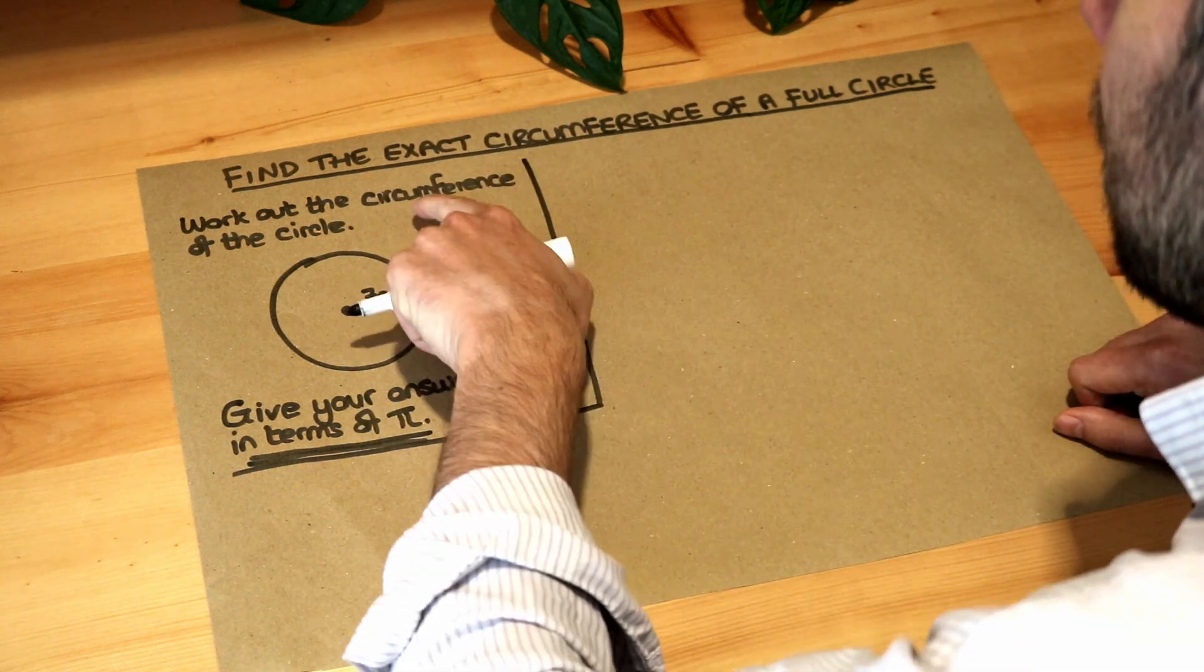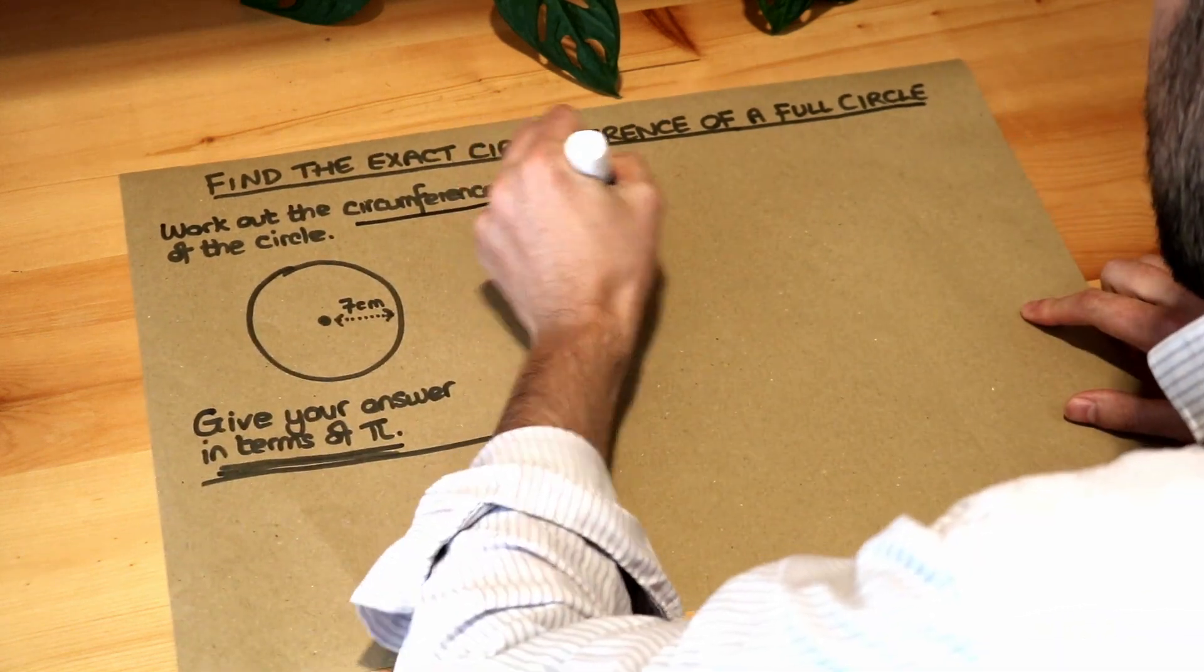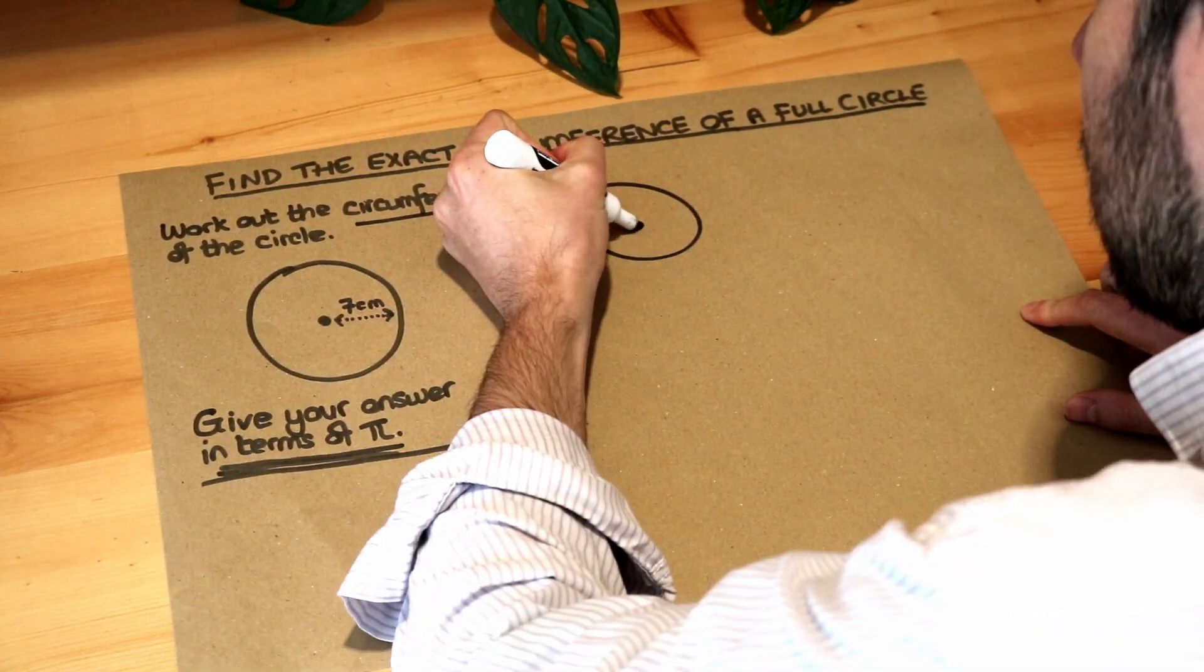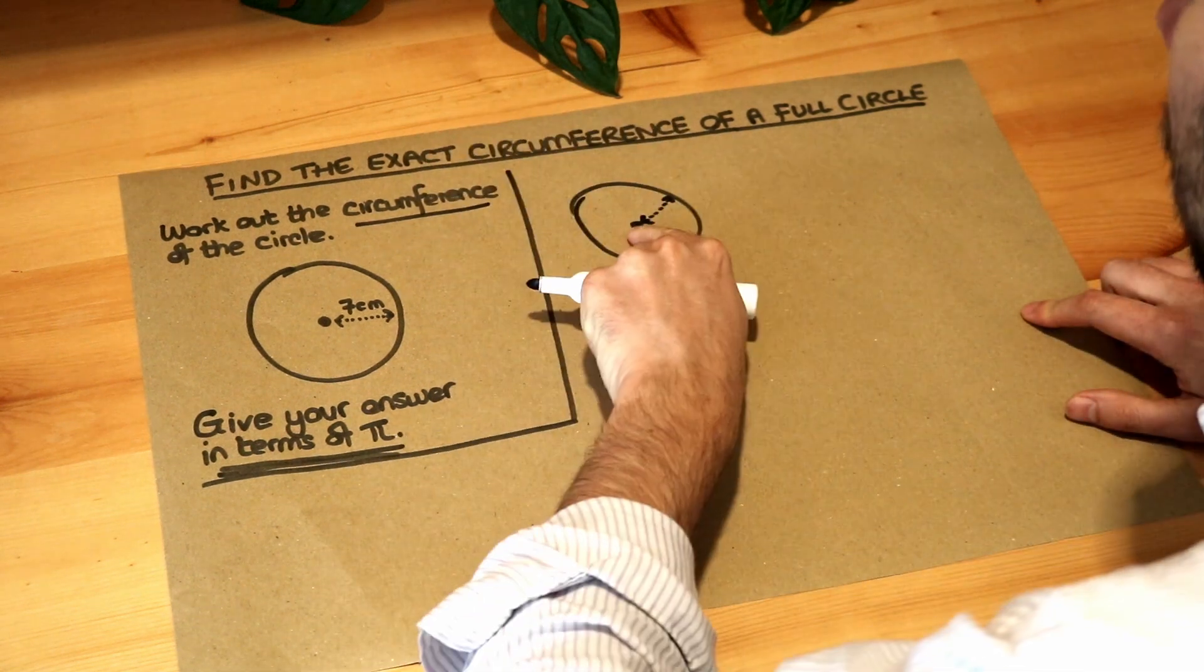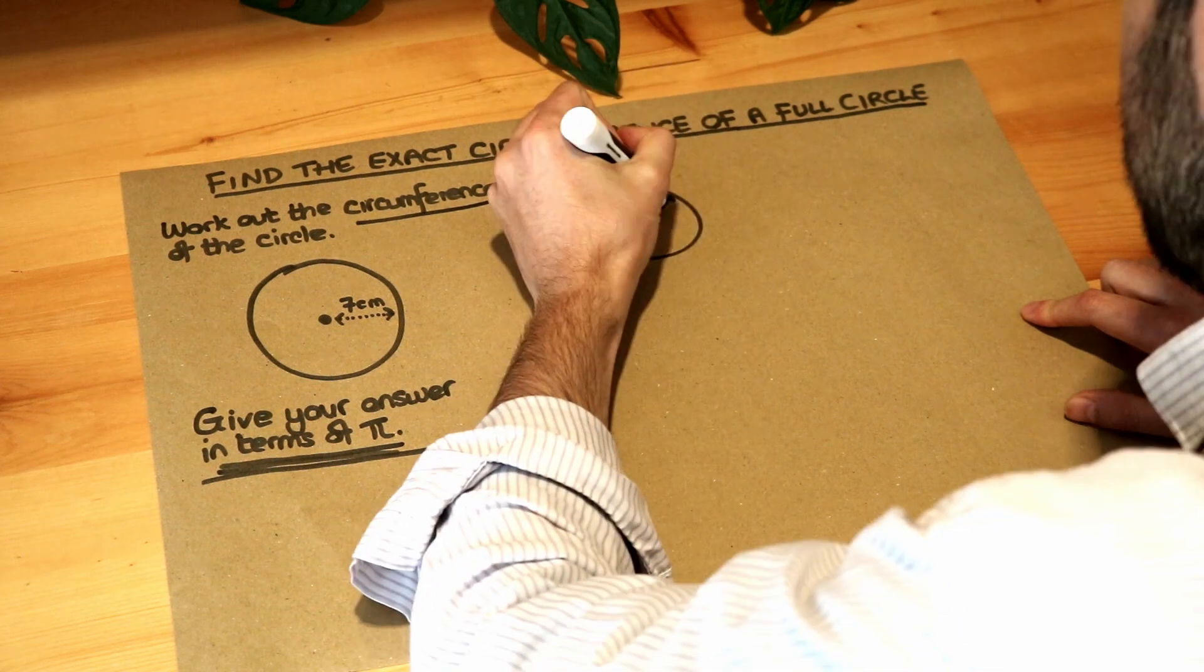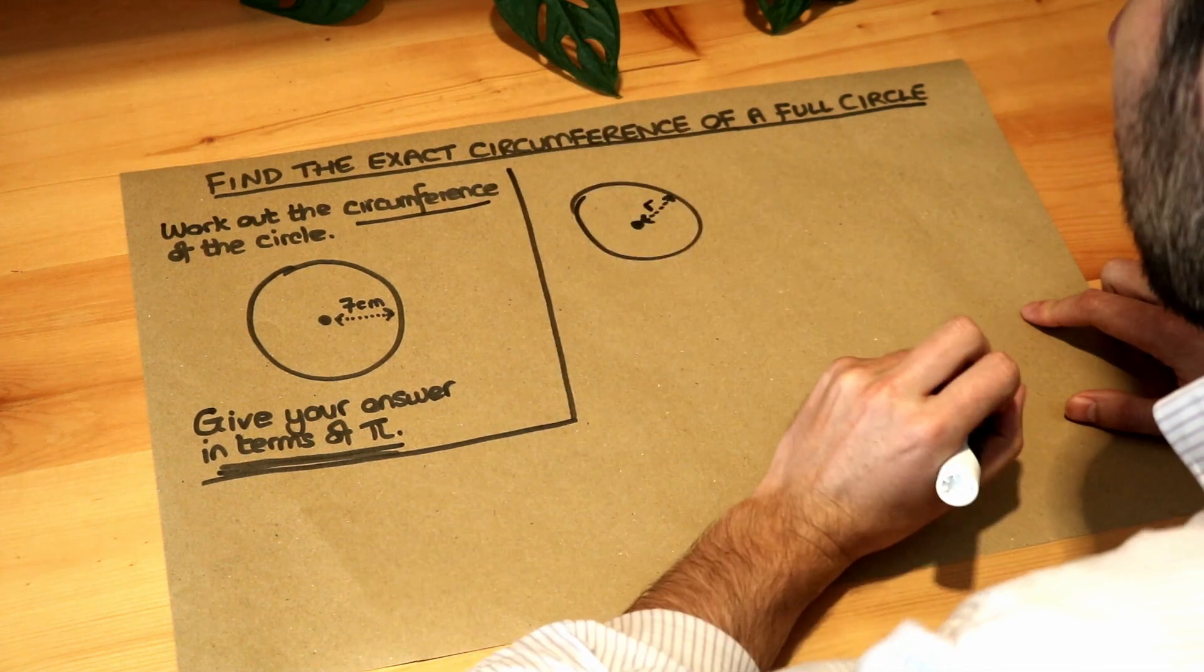So let's remind ourselves how we find the circumference of a circle. If you've got a circle, and remember the radius is the line from the centre of the circle to the perimeter, the circumference. So let's say, call this R for radius.